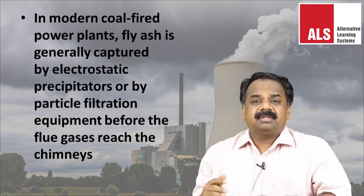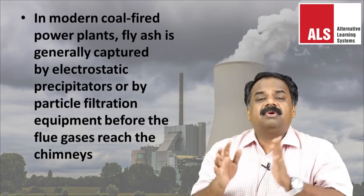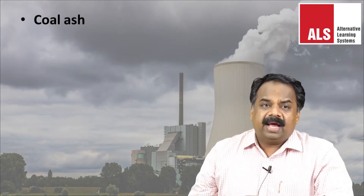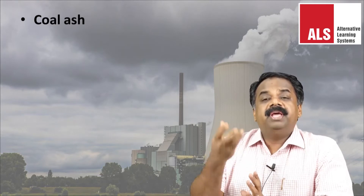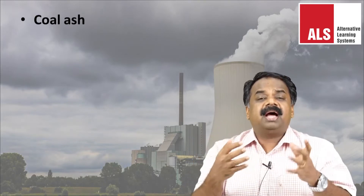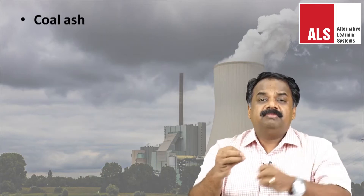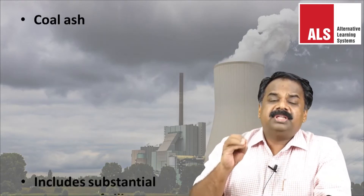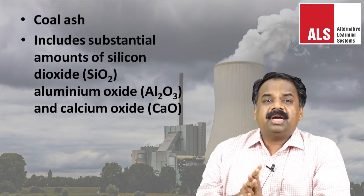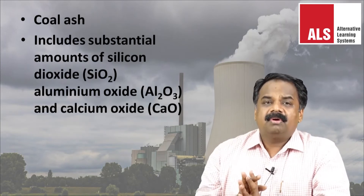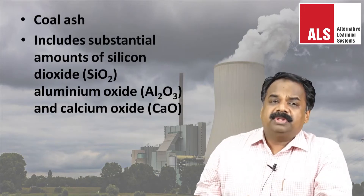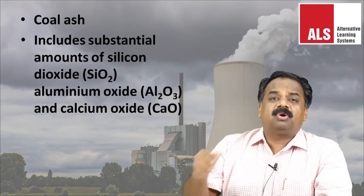Together with the bottom ash removed from the bottom of the boiler, fly ash is collectively known as coal ash. Depending upon the source and composition of the coal being used — since coal from different locations contains different waste materials — fly ash can contain various harmful chemicals.